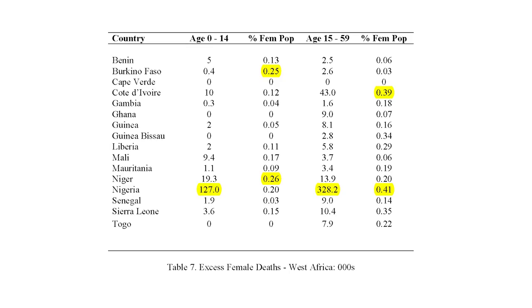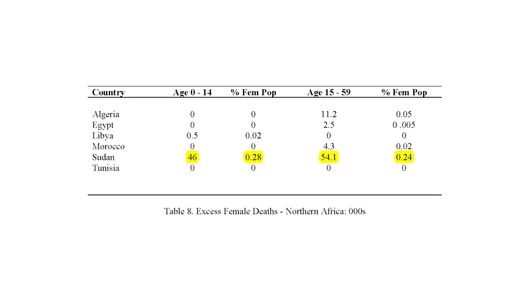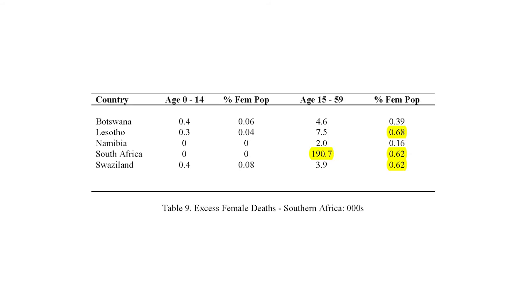In West Africa, where most of the missing women are, Nigeria is a big player partly because they're the hugely populated country. When you look at percentages, Niger and Burkina Faso are as high as Nigeria for the female population. For the older age group, Nigeria is the biggest number and also the biggest percentage, with Cote d'Ivoire also significant. North Africa has very few missing women in general — and if they have any at all, it's in Sudan. Southern Africa has almost no missing women at younger ages, but many at the older ages from HIV.